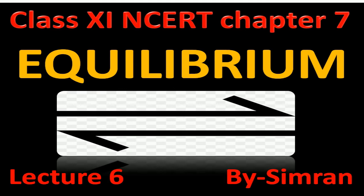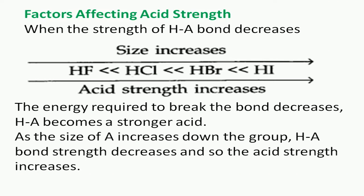Hello everyone, welcome. Today our topic is equilibrium — this is Chapter 7 of Class 11 Chemistry. In the previous lecture we discussed the Lewis concept, Arrhenius concept, and Brønsted concept. Now we discuss factors affecting acidic strength. We have learned how an H+ ion or an electron pair can define an acid, but now we ask: how much strength will an acid have?